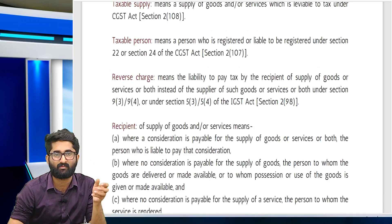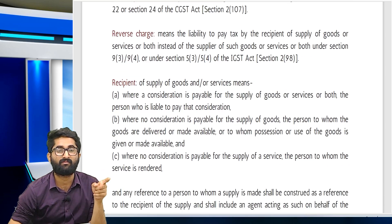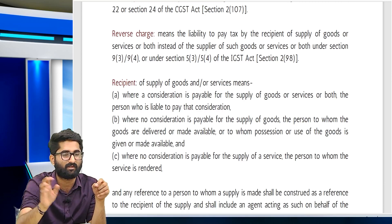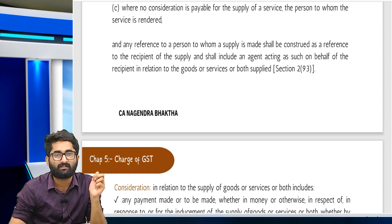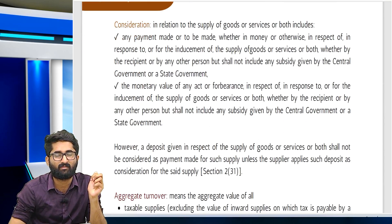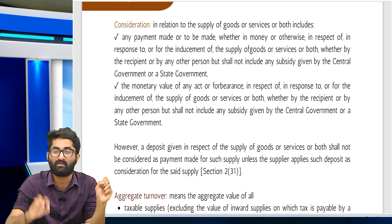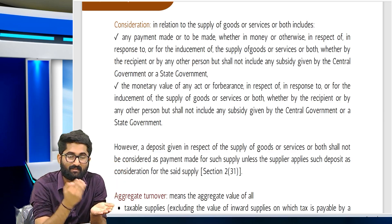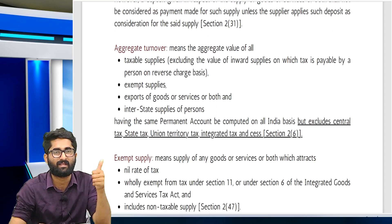Under reverse charge, section 93 and 94 — if you have to pay under section 93/94 then you are liable under reverse charge. Recipient: where consideration is required, the one who pays the consideration is the recipient; where consideration is not there, the one who receives the goods or consumes the service is the recipient. Consideration means anything in the form of money or any other kind, or any act which you do, excluding subsidy given from the central or state government.